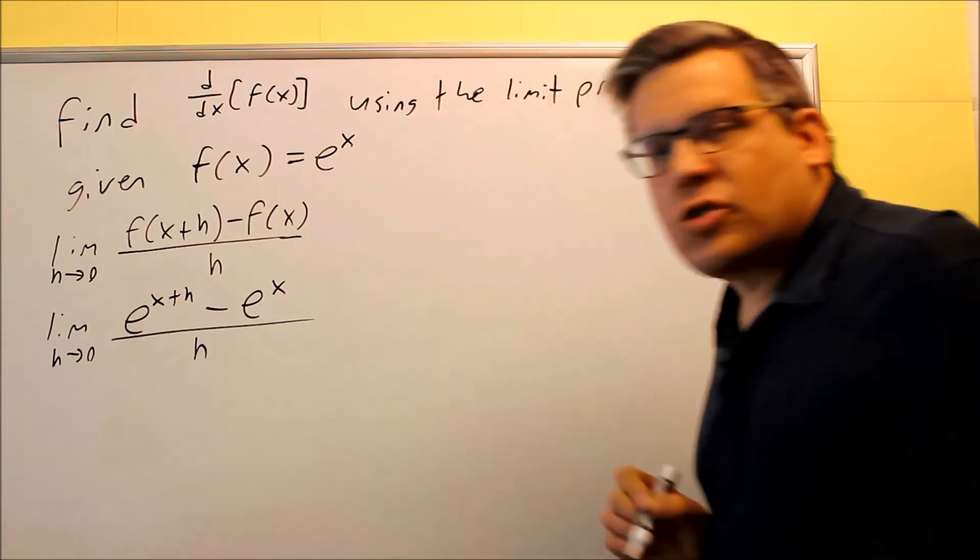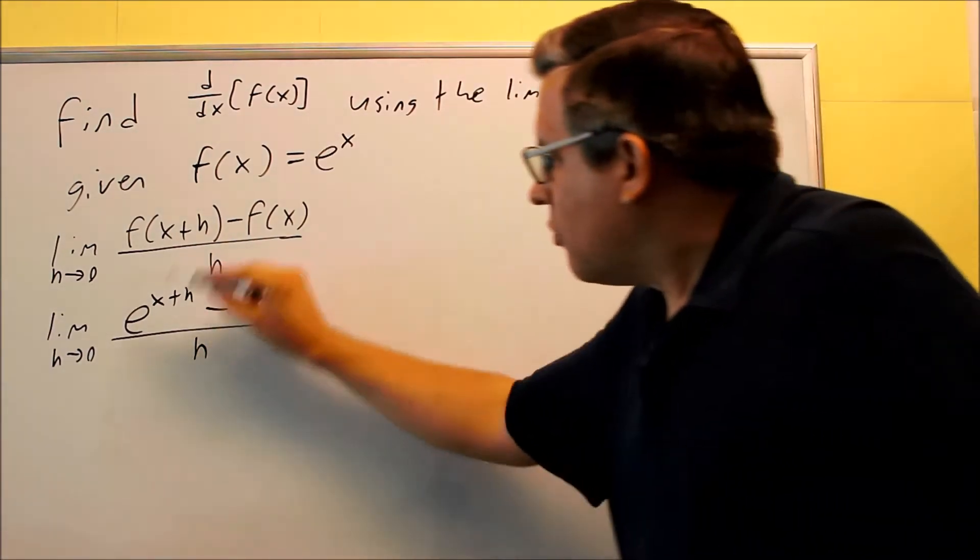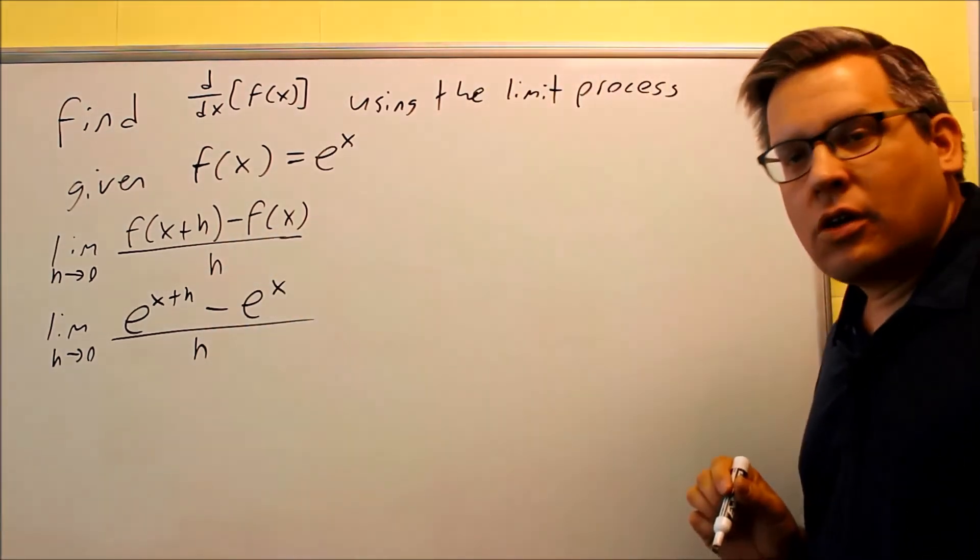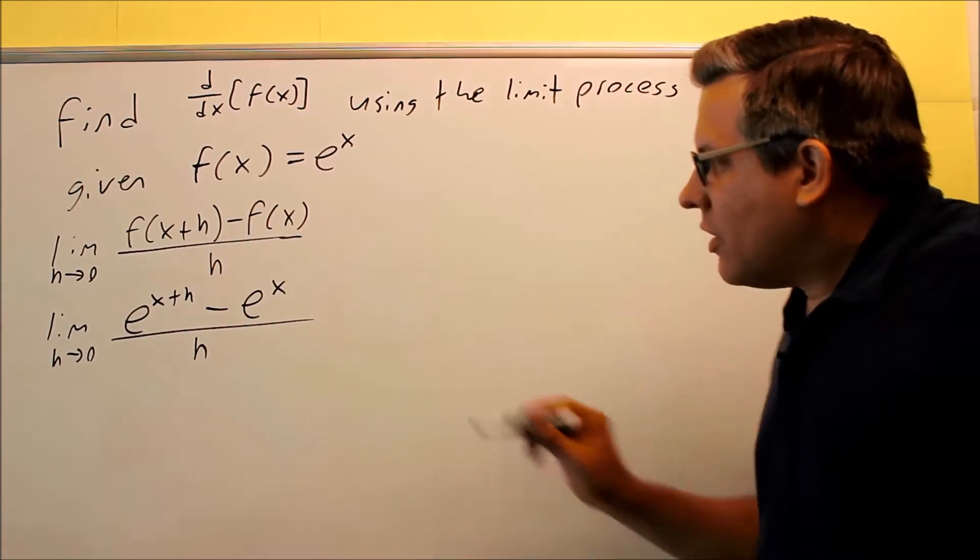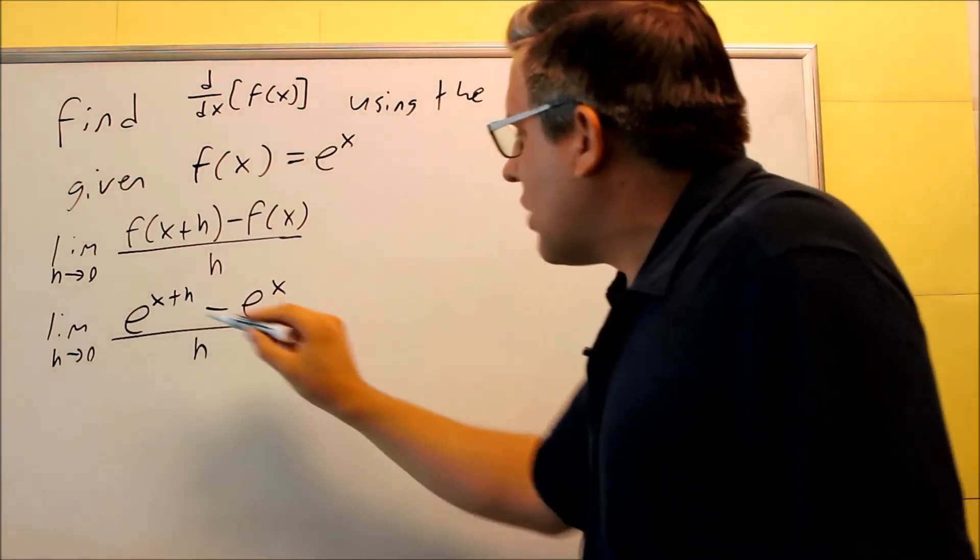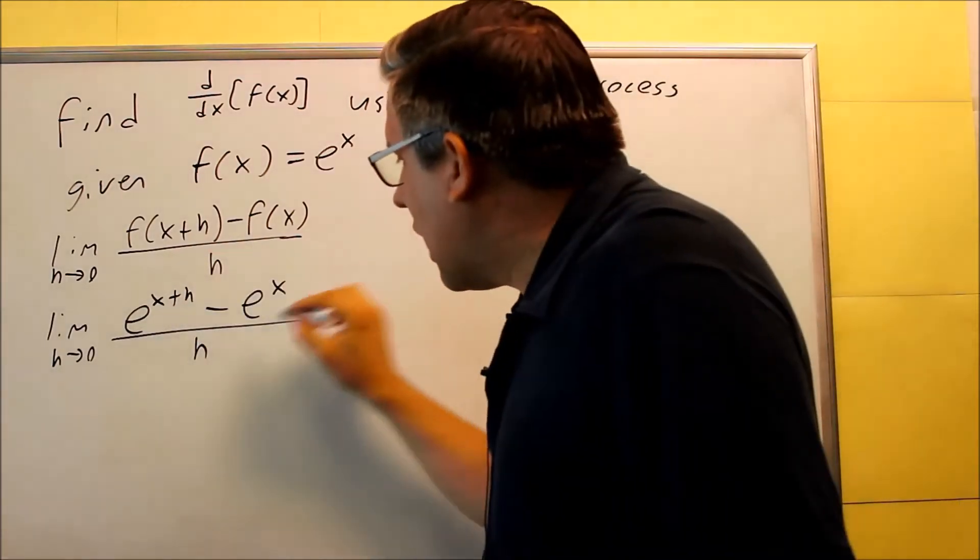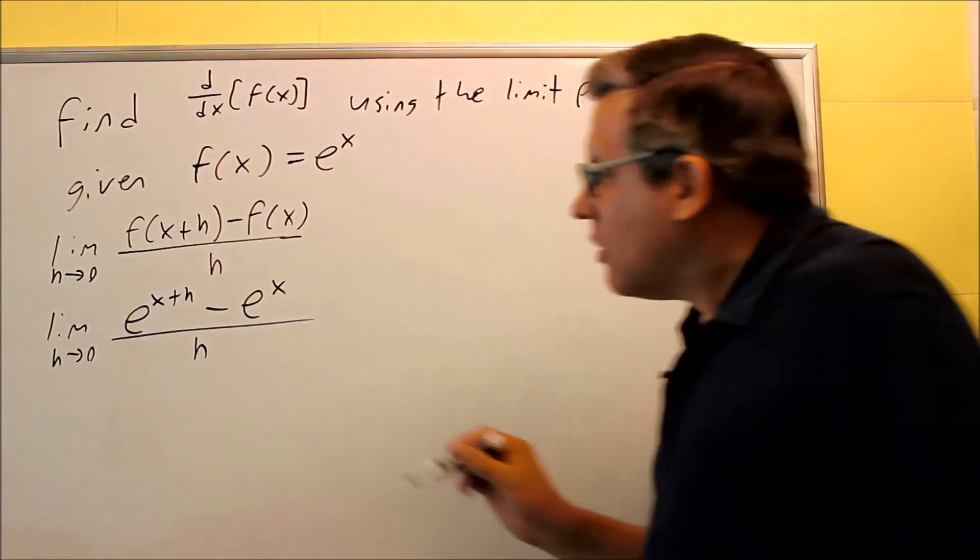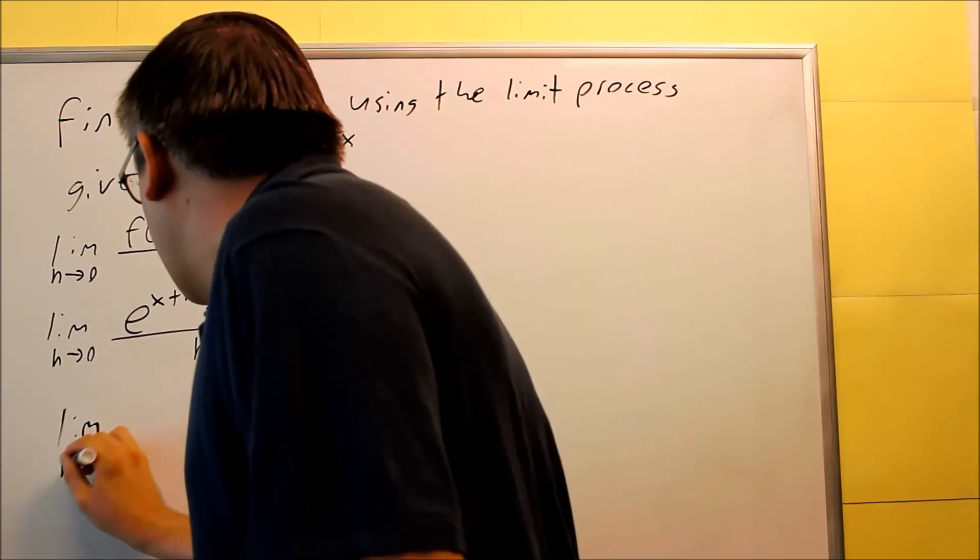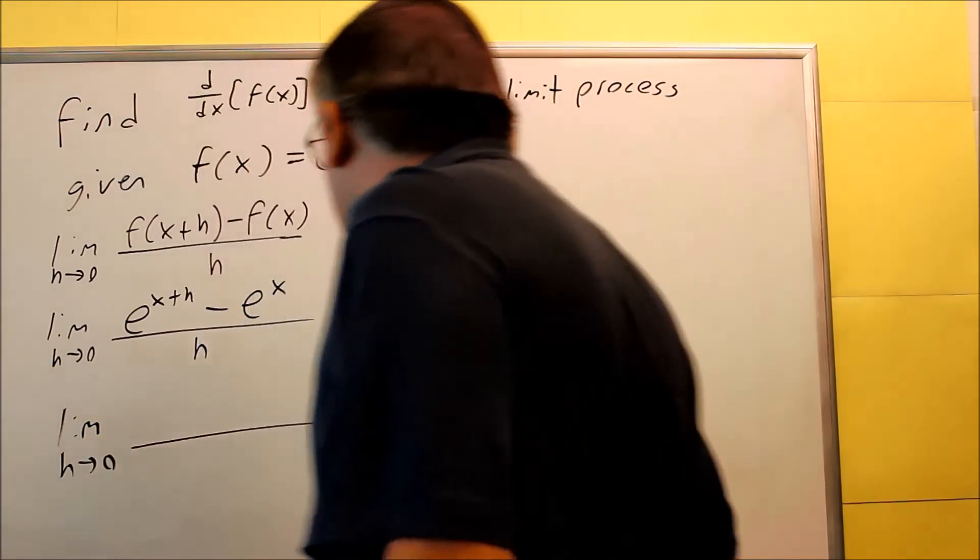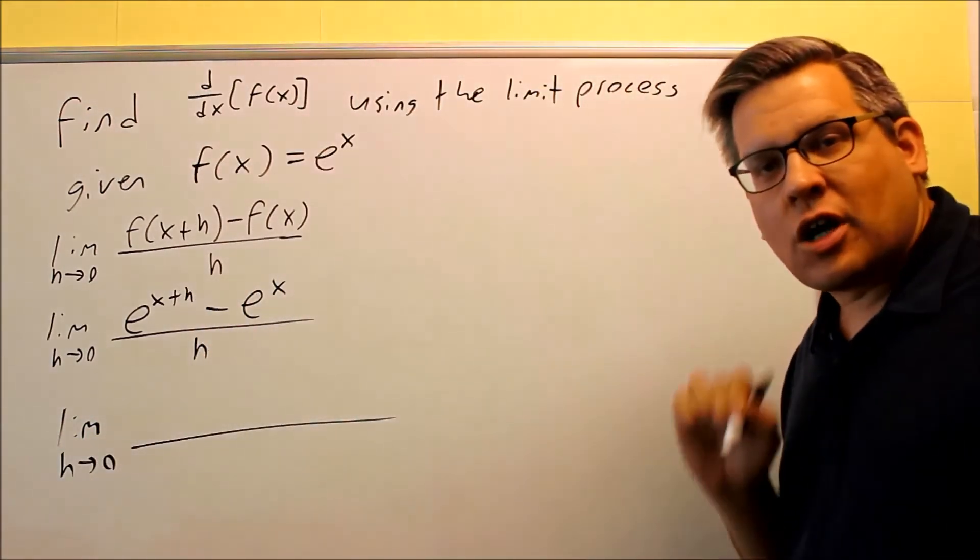Now, if I put 0 in there, I'm still dividing by 0, so I need to do some algebraic manipulation here in order to solve this. What I notice is I'm going to do some exponent rules because the top part is one where I can play around with that. So let's apply some of our rules of exponents that we talked about previously.